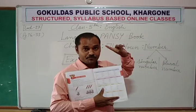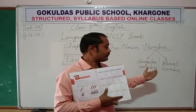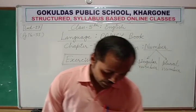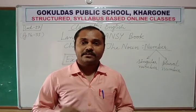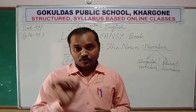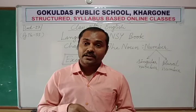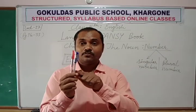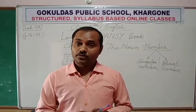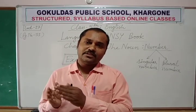In English we have two types of numbers: singular number and plural number. Just like if I have only one pencil, that is a singular noun — I have a pencil, where 'a' means one. But if I have two pens — more than one — then that is a plural noun.